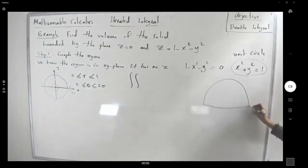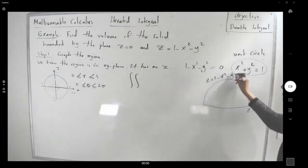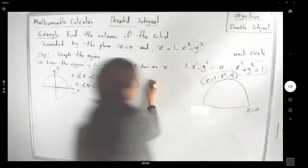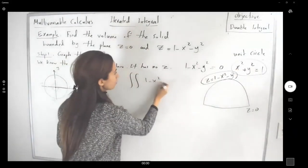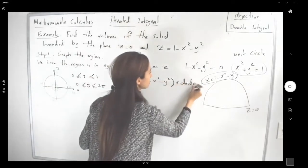This is your surface on top, and from bottom, it stops here. This is z equal to 0, and this guy is z equals to 1 minus x squared minus y squared. So this is the ceiling that you have. So you get 1 minus x squared minus y squared, r dr d theta.